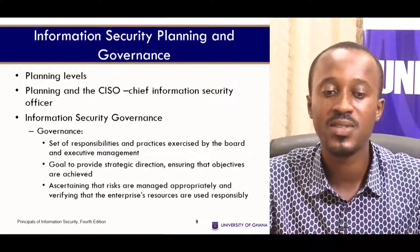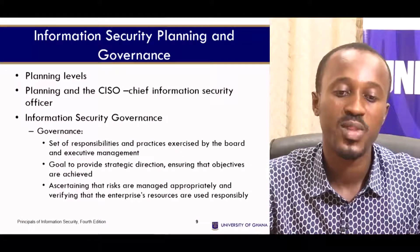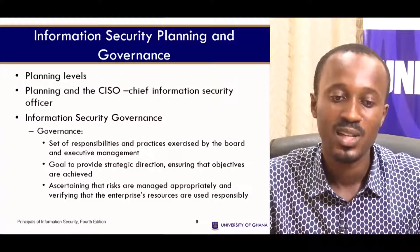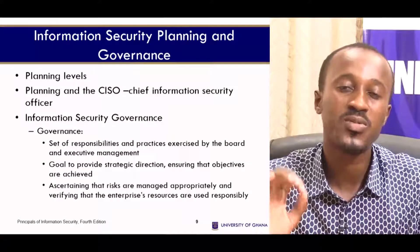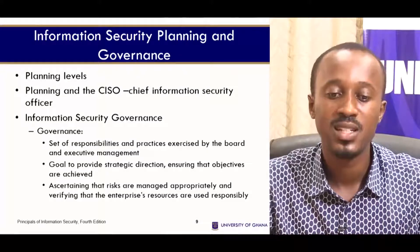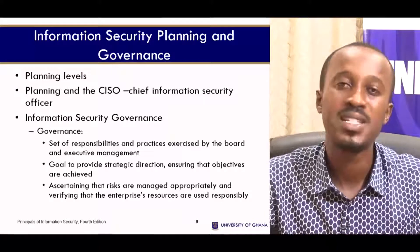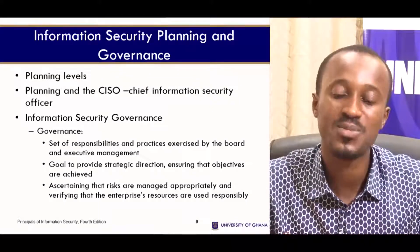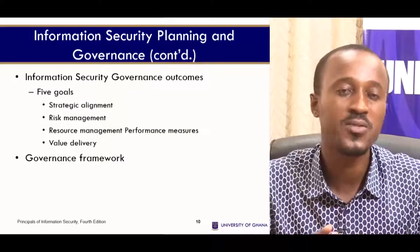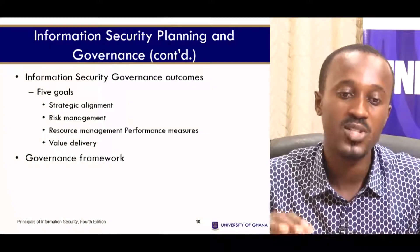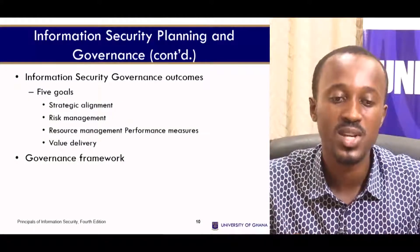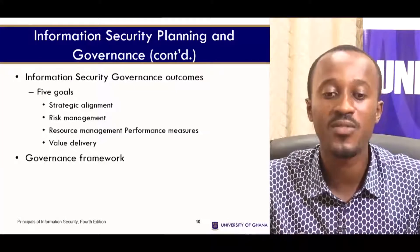Regarding governance, information security governance is a set of responsibilities and practices exercised by the board of executive management. The goal is to provide strategic direction, ensure that objectives are achieved, ascertain that risks are managed appropriately, and verify that the enterprise's resources are used responsibly. Under information security governance outcomes we have five goals: strategic alignment, risk management, resource management, performance measures, value delivery, and the governance framework itself.